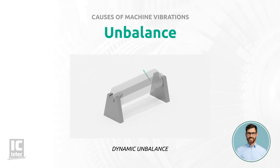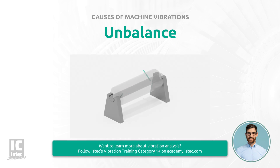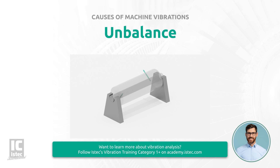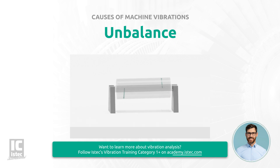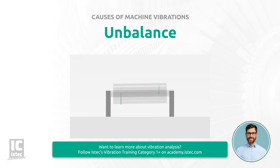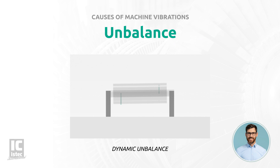Third, dynamic unbalance is the most common type of unbalance and the result of a combination of static and coupled unbalance. The principal mass axis is displaced and not parallel to the shaft center line.